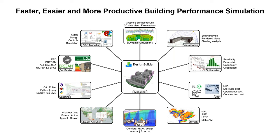Renjith will demonstrate that today by showing how natural ventilation can be assessed quickly during early design, but then seamlessly progressed into more detailed design and modelling without having to use another model or start again in different software. DesignBuilder is widely regarded as the best mainstream tool for modelling geometry, which is important given the time most modellers spend on geometry creation. We don't have time to cover that today, so Renjith will start with a pre-built model.